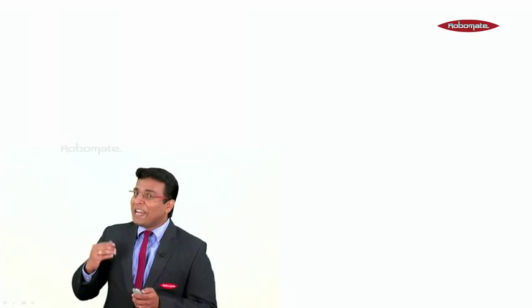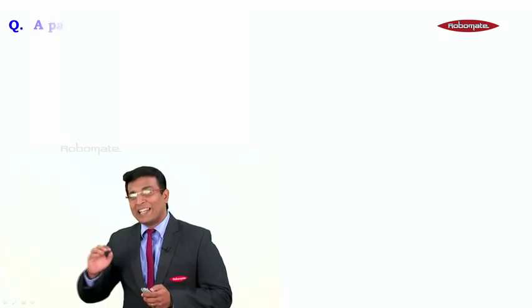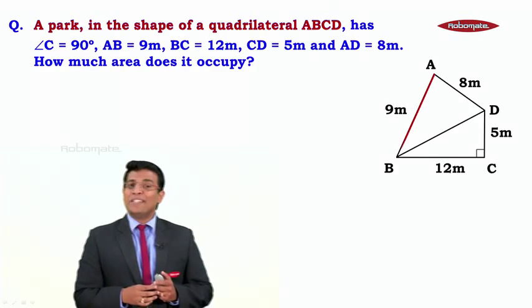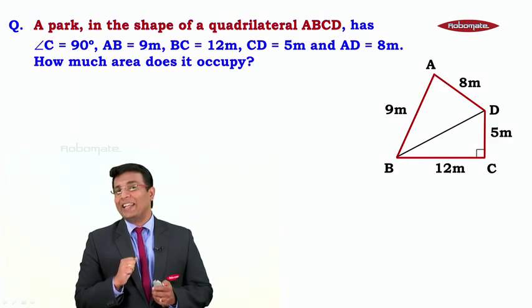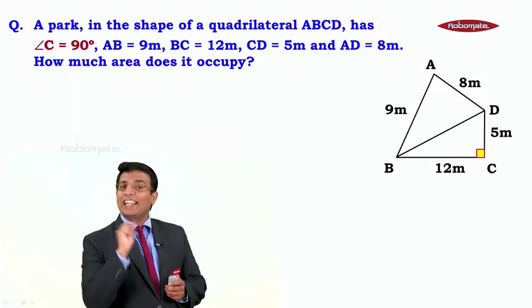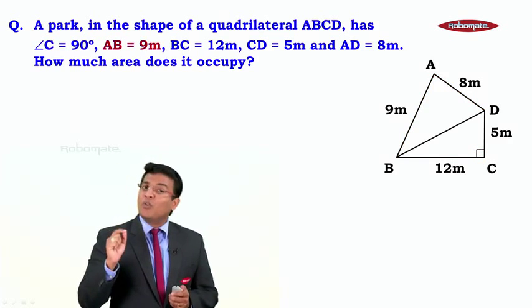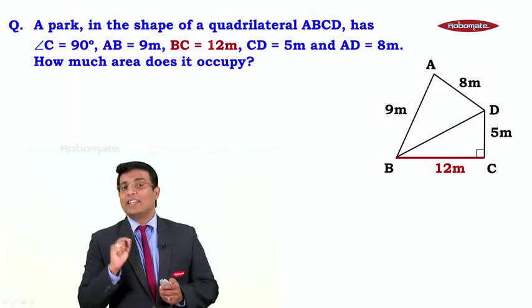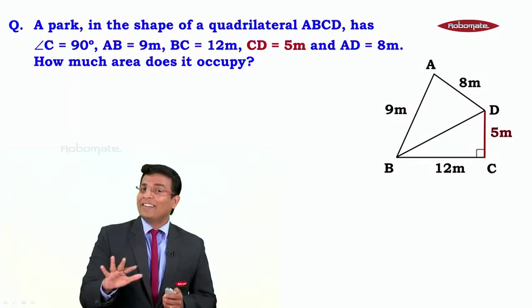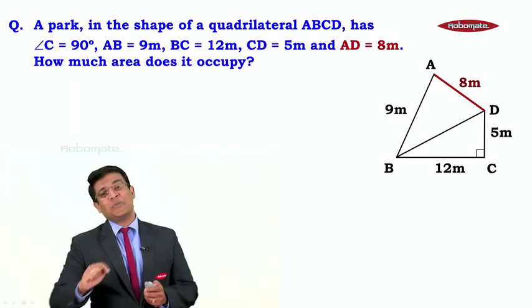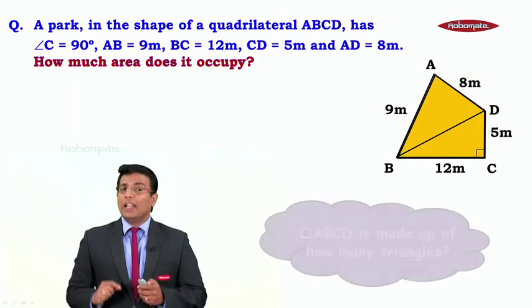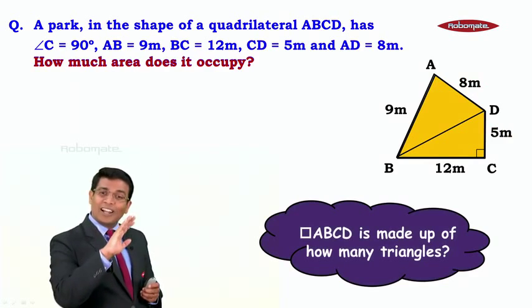Hi students, let's do another very interesting sum based on Heron's formula. It says a park in the shape of a quadrilateral ABCD has angle C equal to 90 degrees, AB is equal to 9 meters, BC is equal to 12 meters, CD is equal to 5 meters, and AD is equal to 8 meters. They say how much area does it occupy? That means we are talking about the area of this quadrilateral ABCD.